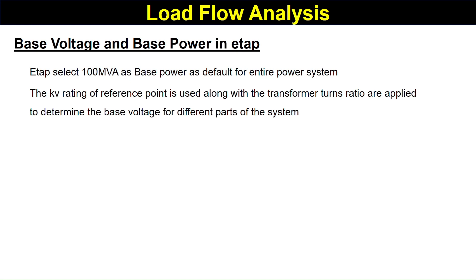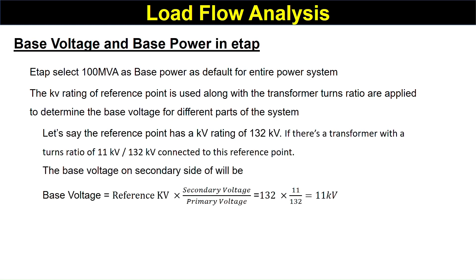Let me explain this with an example. Let us say the reference point has a voltage rating of 132 kV. If there is a transformer with a turns ratio of 11 kV / 132 kV connected to this reference point, the base voltage on the secondary side will be: base voltage equals the reference value multiplied by secondary voltage divided by primary voltage. Here, the reference value is 132 kV, the secondary voltage is 11 kV, and the primary voltage is 132 kV.